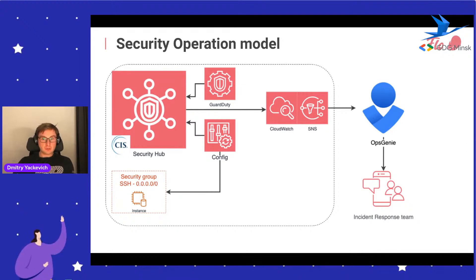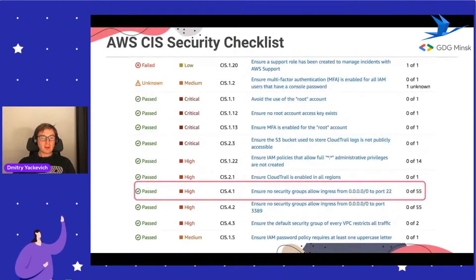How does this look in the operational model on AWS? Config records changes and Security Hub analyzes whether a change is compliant or not. GuardDuty can send a signal via SNS topic to our incident management tool - we use OpsGenie as our incident management tool - which has a rotation mechanism, and our incident response team receives notifications: 'okay guys, you have a problem now, you need to fix it.' Security Hub covers the CIS framework with a lot of controls monitored across the entire environment.